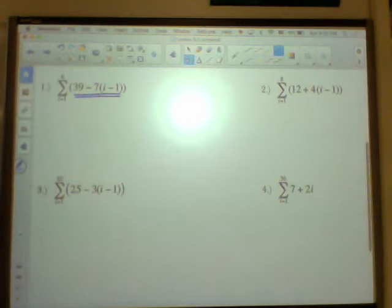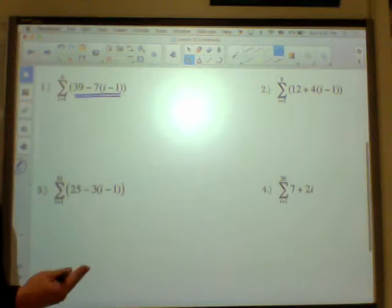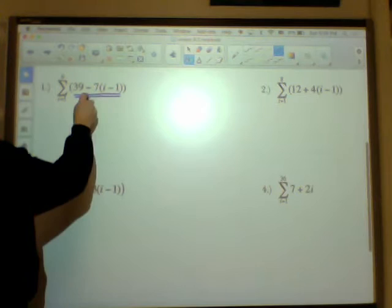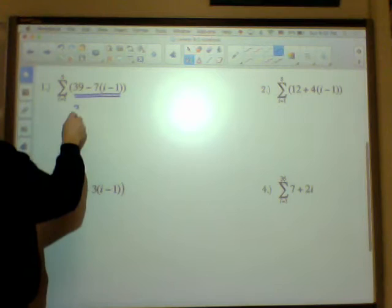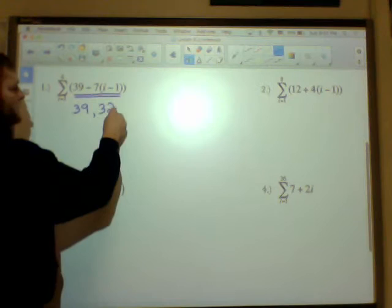And this index is telling me to start with an i value or index value of 1 and go up to 6. If I start by substituting a 1 in here and go with a 2, then I substitute a 3, substitute a 4, substitute a 5, and substitute a 6. So technically, the first term here, if I put in a 1, I substitute in a 1 here, I can get 39 minus 7 times 0. So 39 is my first term. Then I substitute a 2 in here, and I'm going to get 32.